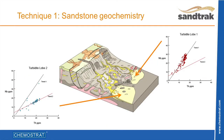SandTrack utilises high-resolution ICP-based elemental data to fingerprint individual depositional systems, such as turbidite lobes, based on variations in provenance-sensitive elements.